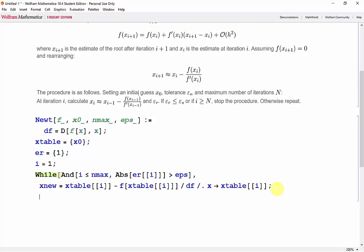Now we can use the append function to add to our list of estimates. So x table is equal to x table appended with x_new.